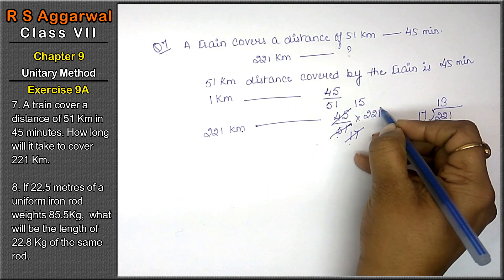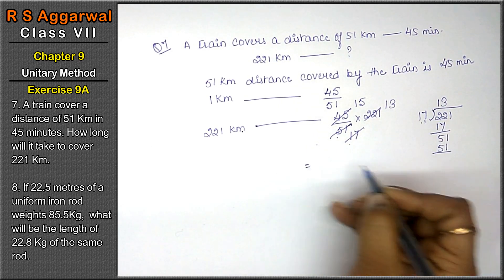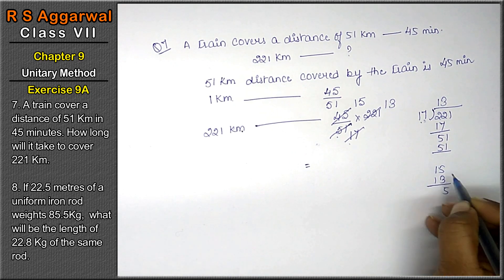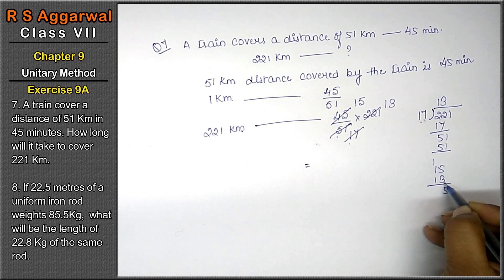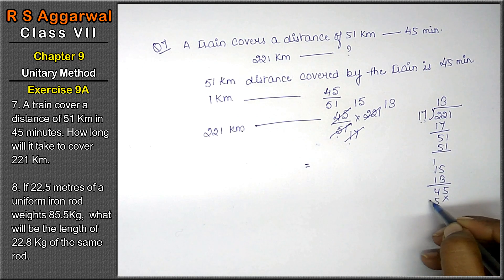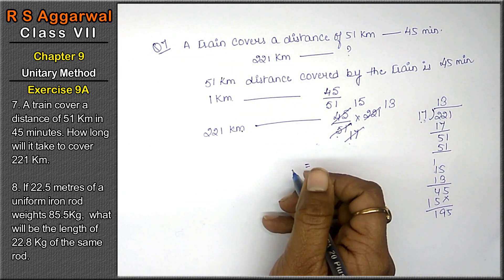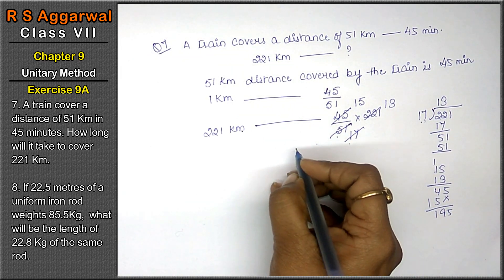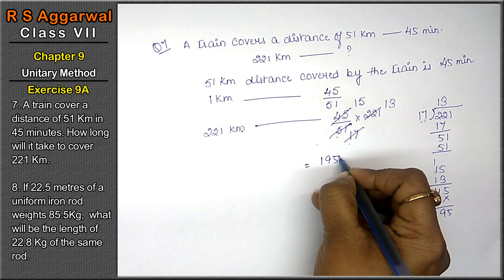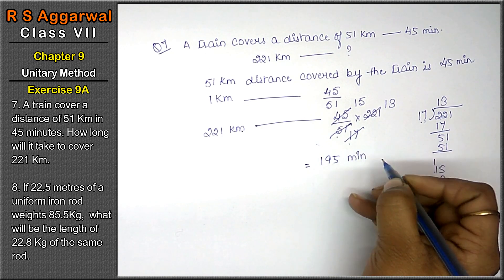Now 17 into 13. The answer will be 15 into 13. 3 fives are 15, 3 ones are 3 — that is 4. So 195 is the answer. 195 minutes.